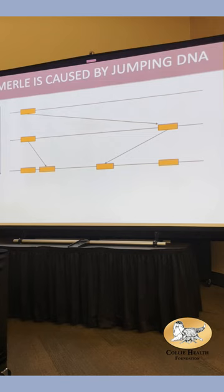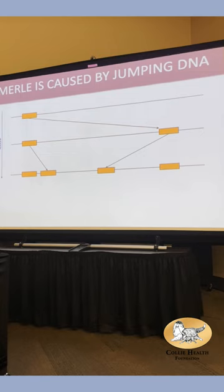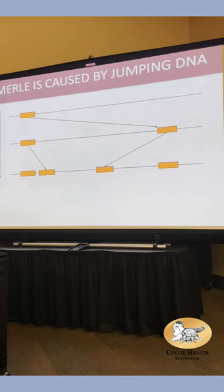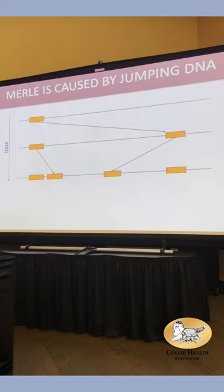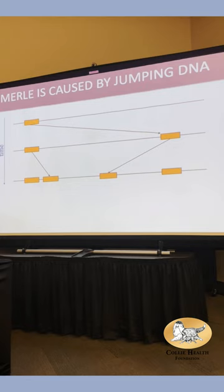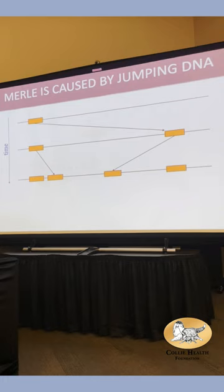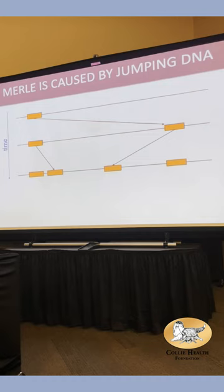This insertion is jumping DNA — a transposable element. It has the ability to copy itself and then insert itself somewhere else. If this happens in the germline — where egg and sperm come from — the puppy now has the original location and a new location, and each can keep copying itself. The exact piece of jumping DNA that causes merle makes up 7% of the dog genome, and that number is only going to get bigger because it continues to copy and paste itself. Usually when it pastes elsewhere we don't care, but in our case it pasted into the SILV gene.